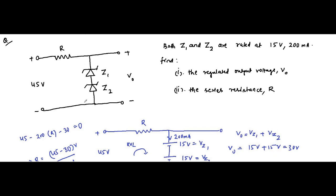This question is related to zener diodes connected back to back. Both undergo breakdown because 45 volt is much greater than the breakdown voltage of 15 volt. The regulated output voltage and rated zener current of 200 milliampere, along with the 15 volt zener voltage, were important in calculating the value of the series resistance R.